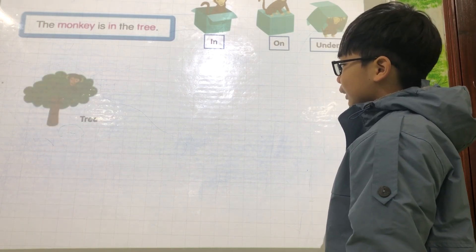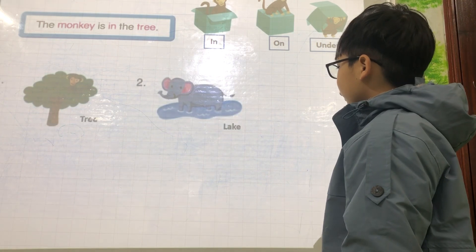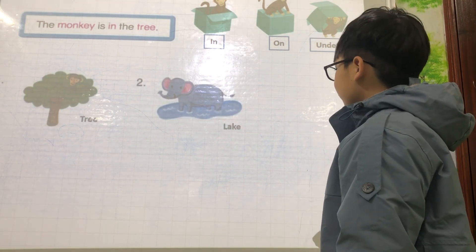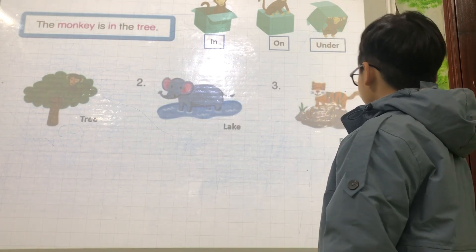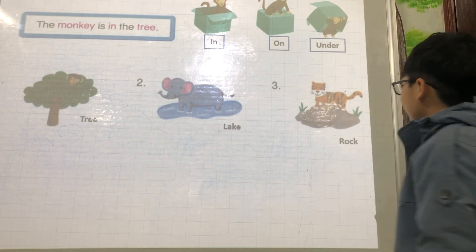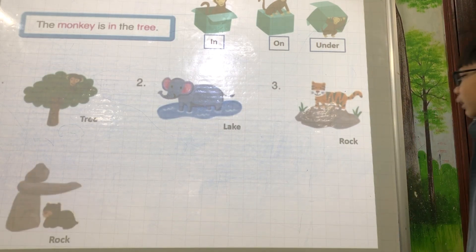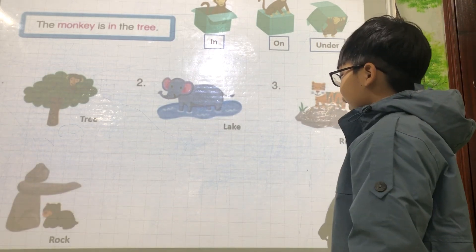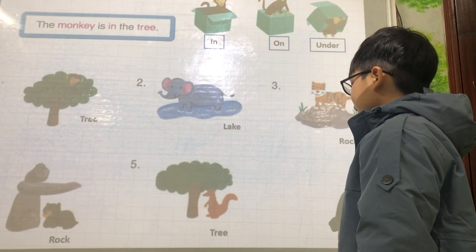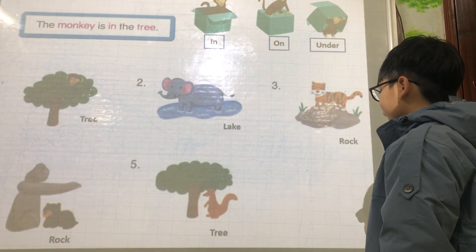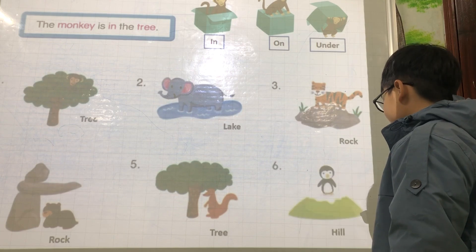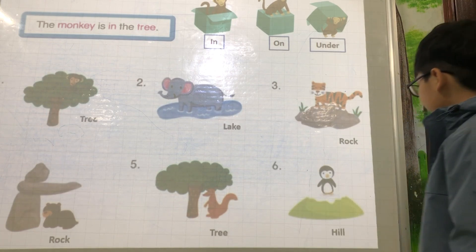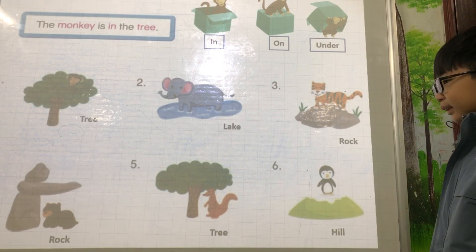The monkey is in the tree. The elephant is in the lake. The tiger is on the rock. The bear is under the rock. The kangaroo is under the tree. The bee is under the tree. Very good.